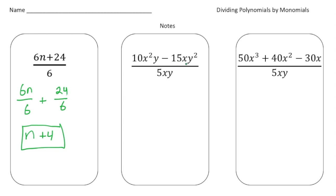This one's a little more complex. We have 10x squared y minus 15xy squared, divided by 5xy. I'm going to first divide 10x²y by 5xy. So 10 divided by 5 is 2, x squared divided by x is just an x, and y divided by y cancels out to 1, so our first part is 2x. Now minus: 15 divided by 5 is 3, the x's cancel out, and y squared divided by y is just y.